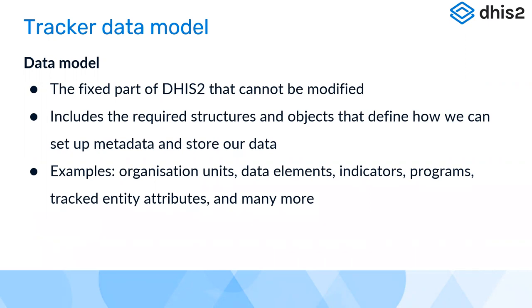In DHIS2, metadata is configured before you start collecting data. When configuring your DHIS2 tracker, you first configure the metadata. Some types of metadata include organization units, data elements, and indicators — which you're familiar with from the fundamentals. For tracker, there are additional metadata items such as programs, tracked entity attributes, and more. Today we'll focus on the metadata that formulates the tracker data model specifically.